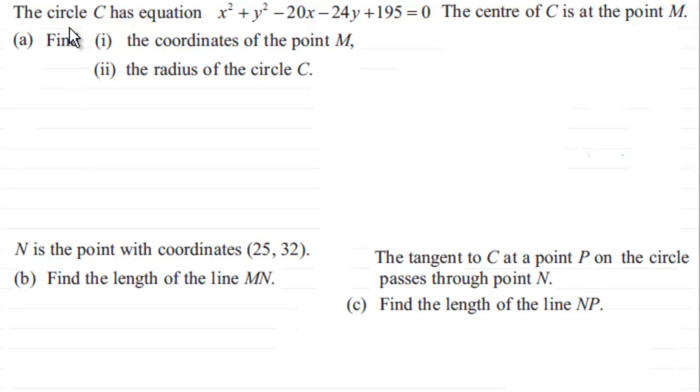So what we've got here is the circle C has equation x² + y² - 20x - 24y + 195 = 0. And the centre of C is at the point M, and we've got to find in part one the coordinates of the point M and the radius of the circle C.